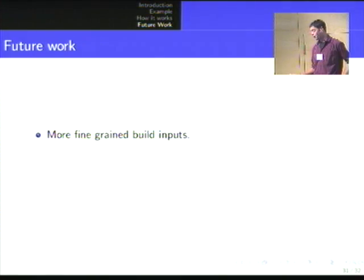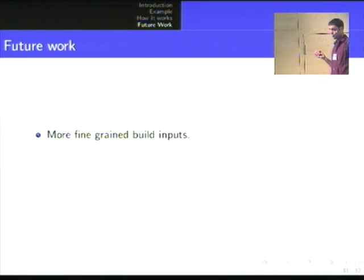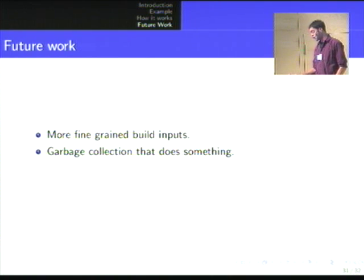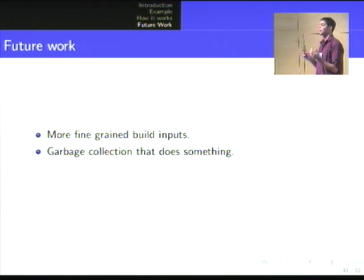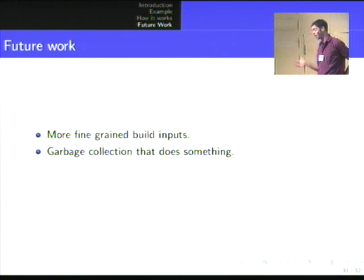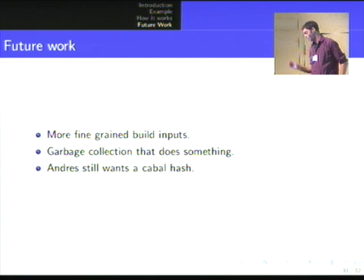For the future, we'd like to have more fine-grained build inputs, like which backend is used, and importantly whether a package was compiled with profiling, with GHCi support, or with dynamic linking. The garbage collection also needs to be improved — the main use case is when you're working on a package and cabal-install it repeatedly to test it, generating many instances of the same package. And Andres still wants a cabal-hashton somehow.